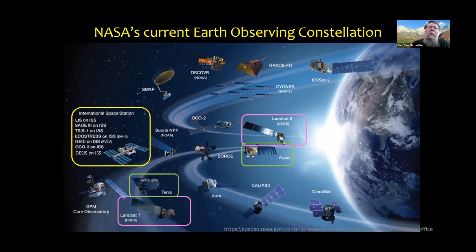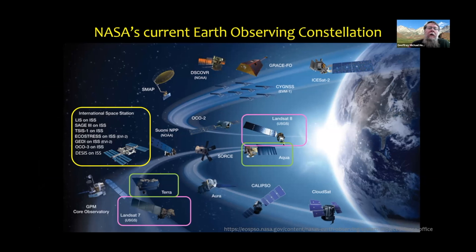Here is NASA's earth observing constellation. Landsat 8 and Landsat 7 — Landsat 7 will be retired once Landsat 9, launching late next year, is successfully in orbit. MODIS on Terra and MODIS on Aqua have been very important in the past two decades for understanding the planet and mapping land cover, as well as many other things. There are also lots of sensors on the International Space Station, some of which are very useful for land cover mapping.